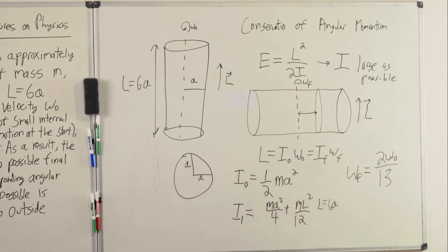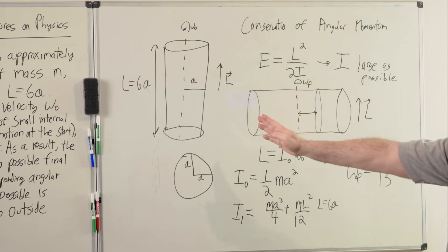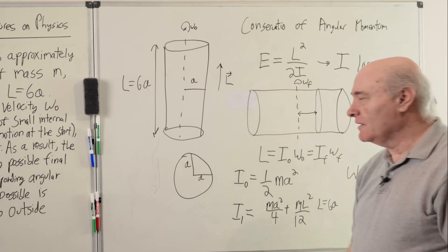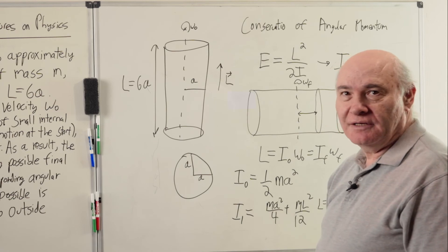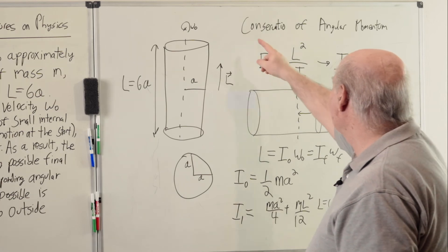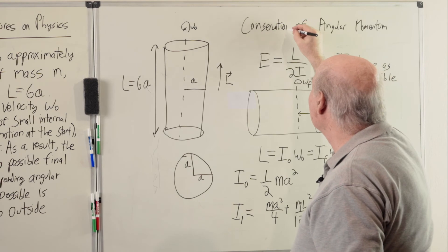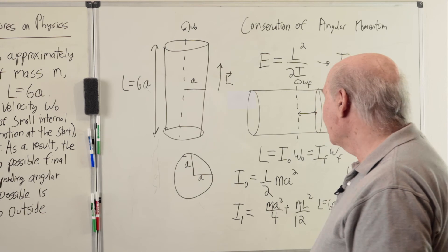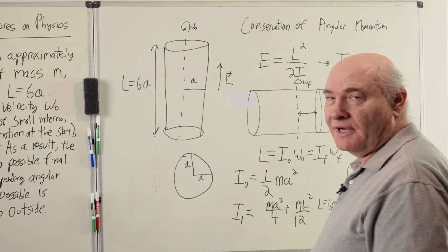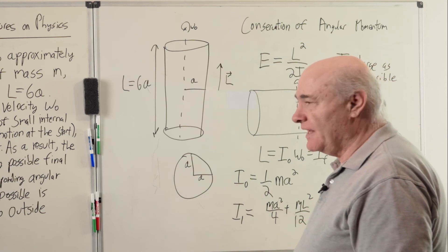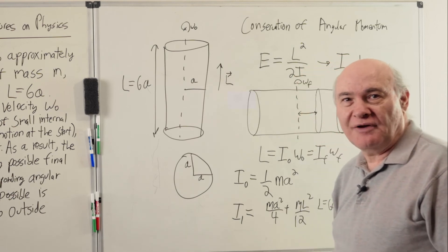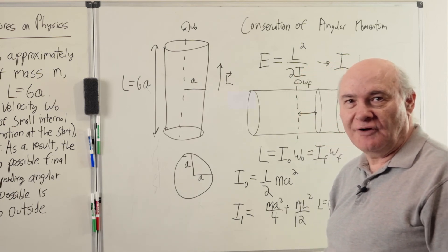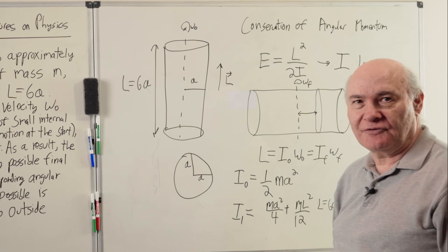There aren't very many calculations in this problem. It's a relatively easy problem — you just have to understand what's going on and the fact that angular momentum is conserved. This is a really good problem to illustrate how in physics, conservation laws — whether it's linear momentum, angular momentum, or energy — can solve problems much more easily than trying to do it dynamically. Thank you very much, and I'll continue with some other problems that are concept problems from the Feynman exercises for the Feynman Lectures on Physics.